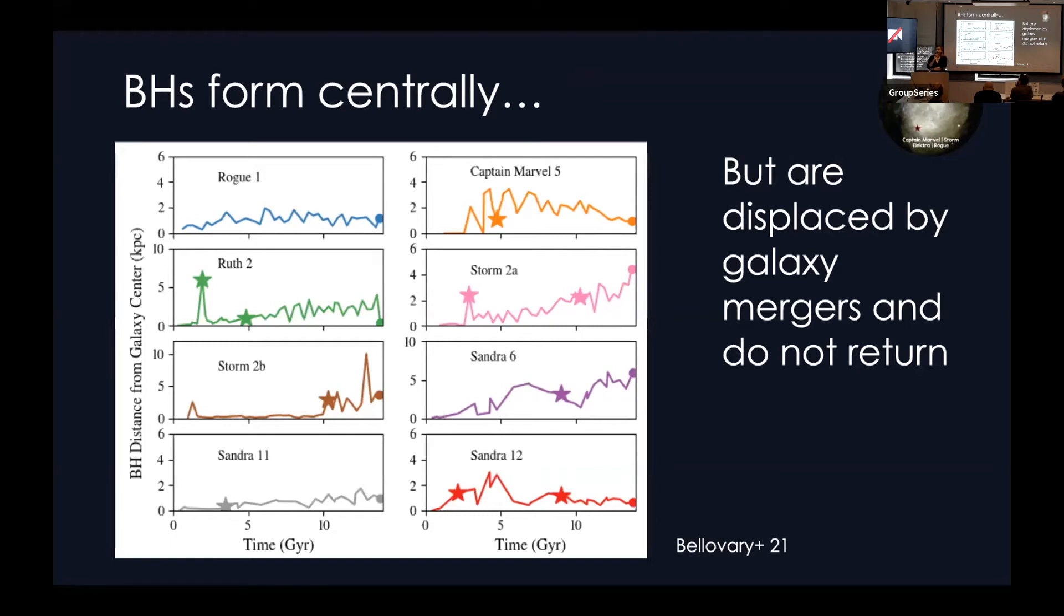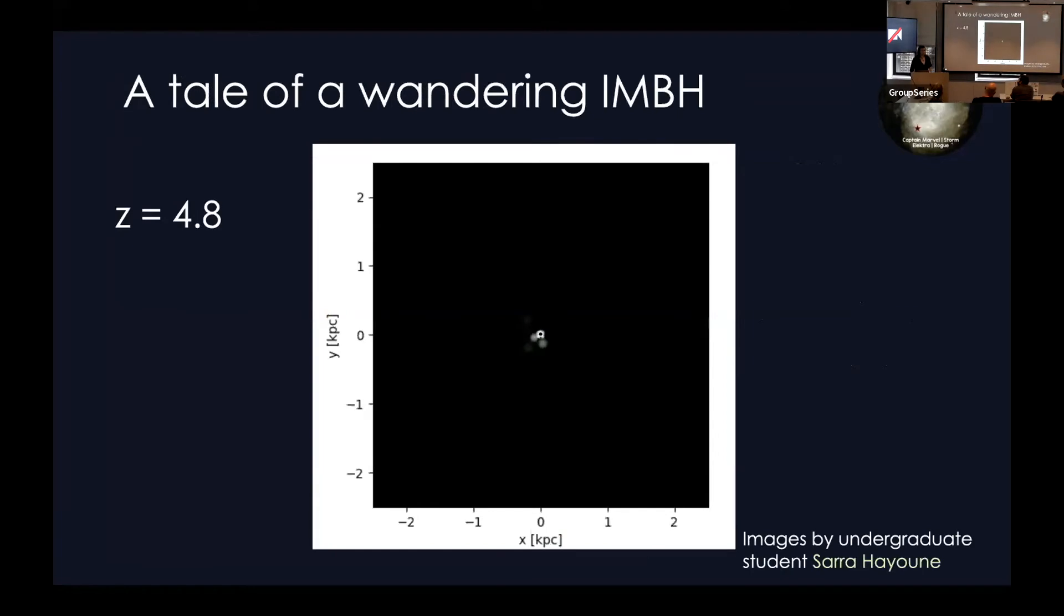So it is galaxy mergers that displace or that cause black holes to be off-center. Black holes form centrally in their galaxies, but there's a merger that displaces them. So each of these plots here are the black hole distance from galaxy center versus time, each for a different galaxy. They all start out at zero. And wherever the star is, is where there's some sort of galaxy merger, which causes it to be displaced. So you can see that often at the point where the star is is when the line jumps up, and that's where a black hole becomes off-center. And in general, it does not come back. It ends up just kind of wandering further and further away. Or sometimes it starts to come back, but it doesn't quite get there. They all have a little bit different history. Some of them have multiple mergers. So this one has a couple.